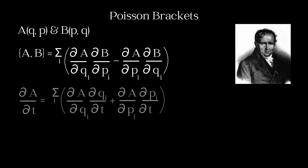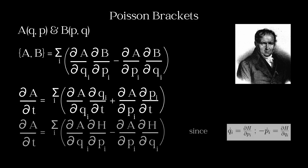Derivative with respect to time of some function A, which is a function of generalized positions and generalized momenta. We take the derivative using chain rule. Derivative of A with respect to position and derivative of position with respect to time plus derivative of A with respect to momentum and derivative of momentum with respect to time. Replacing Q dot and P dot from Hamilton's equation, we pack A dot as the Poisson bracket of A and Hamiltonian.